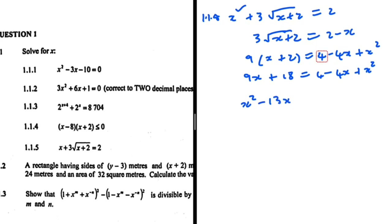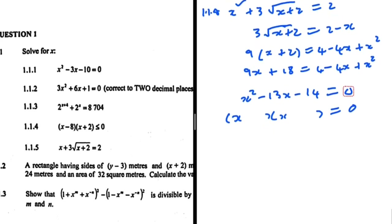Rearranging: x squared minus 4x minus 9x plus 4 minus 18 equals 0, giving x squared minus 13x minus 14 equals 0. We need two numbers that multiply to minus 14 and add to minus 13, which gives minus 14 and plus 1. So x equals 14 or x equals minus 1.